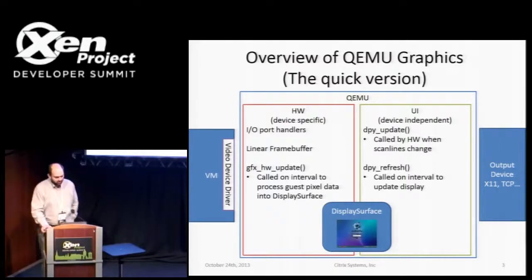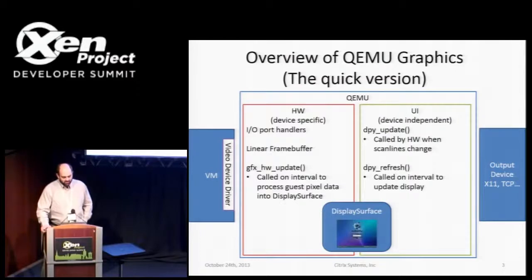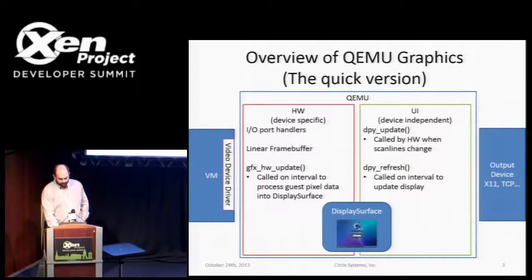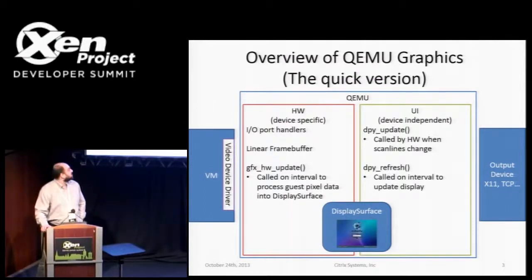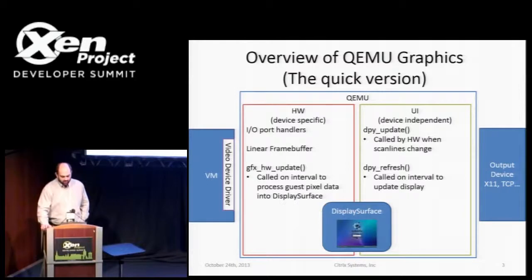Basically what happens is you have a linear frame buffer in your guest's VRAM. There's a periodic timer that calls hardware update, which processes the guest pixel data into a display surface. Then the UI does a refresh — it takes the updated regions, hardware update calls DPY UI update to tell the UI what portions of the screen have changed, and that puts the new bits on the screen.